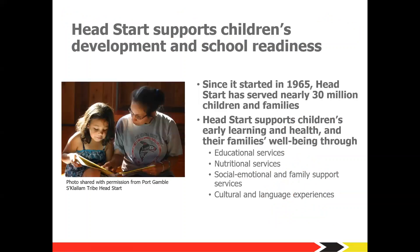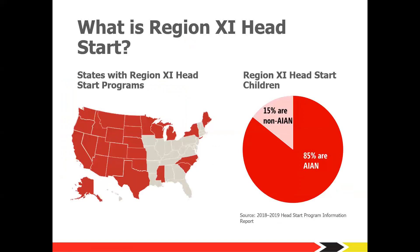For over 50 years, Head Start, as a federal program, has provided child development and family support services starting in 1965 and serving about 30 million children and families since then. Head Start supports children's early learning, health, and their families' well-being through a variety of services. As part of its management of Head Start, the federal government divides Head Start programs into 12 regions — 10 are geographically defined, and the other two are defined by the populations they serve. Region 11 serves children and families in programs operated by federally recognized American Indian and Alaska Native tribes, including about 145 Head Start programs in 26 states, serving approximately 20,000 preschool children.